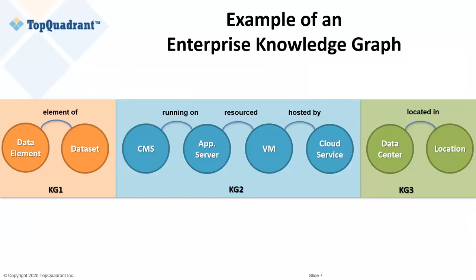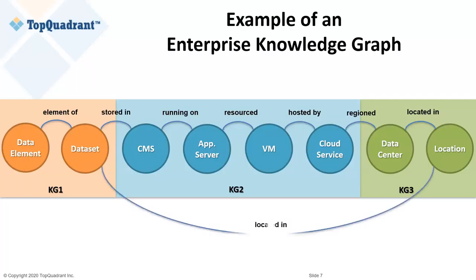For governance, version control, access, and other reasons, you may want to maintain different knowledge graphs. Here we have three: KG1 for data asset management — element mappings, glossary terms, flagging PII, assigning stewardship; KG2 for technical asset management; and KG3 for enterprise asset management. Separately they are manageable, but together they allow us to compose information that never existed before — for example, enforcing a policy restricting physical location of PII storage.